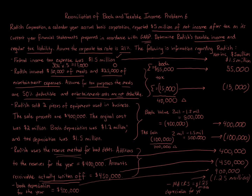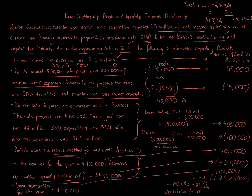Adding all adjustments to the $5 million net income gives taxable income of $6,440,000. To find the regular tax liability, multiply taxable income by the 21% corporate tax rate: $6,440,000 times 21% equals $1,352,400. That is the tax liability owed by the corporation.